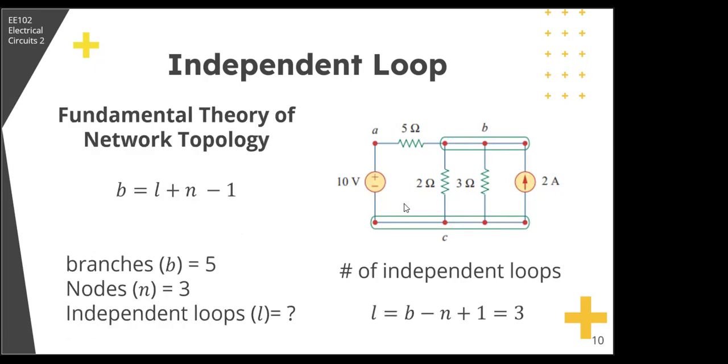Now to determine quickly the number of independent loops, you can use the fundamental theory of network topology. The number of branches equals the number of independent loops plus the number of nodes minus 1. So L equals B minus N plus 1. Number of branches is 5, number of nodes is 3, so 5 minus 3 plus 1 equals 3.